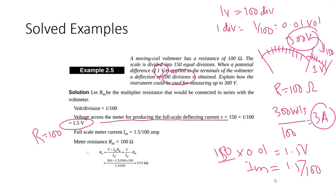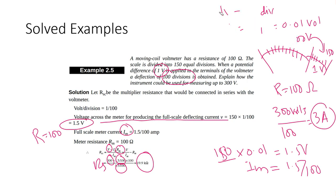The maximum current Im equals 1.5 divided by 100. The meter resistance Rm is 100 ohm and V is 300 volts. Substituting these values gives Rsc equal to 19.9 kilo-ohm.